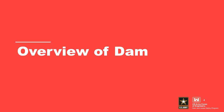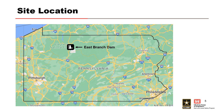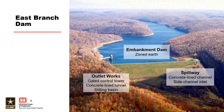East Branch Dam is located about 130 miles northeast of Pittsburgh on the east branch of the Clarion River. The dam is a zoned earth embankment, 184 feet high and 1,725 feet long, with a gated control tower and a concrete-lined conduit through the right abutment. It was constructed between 1947 and 1952.